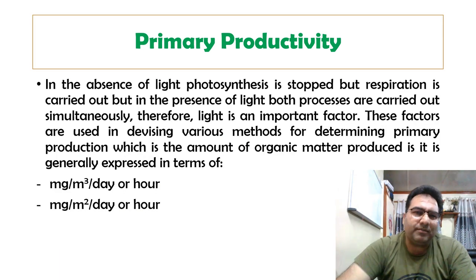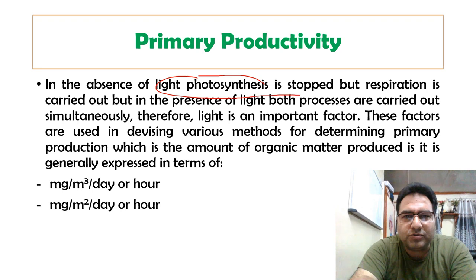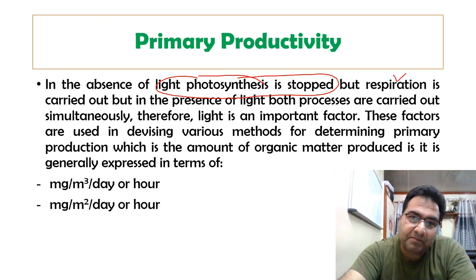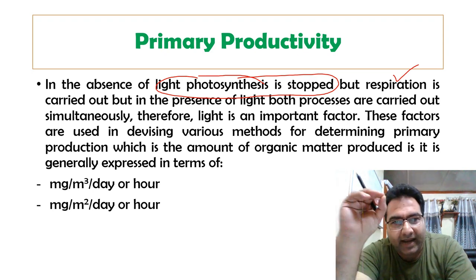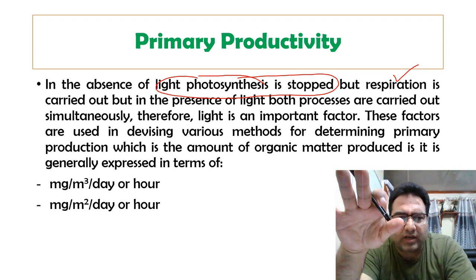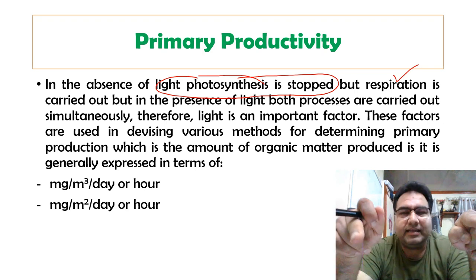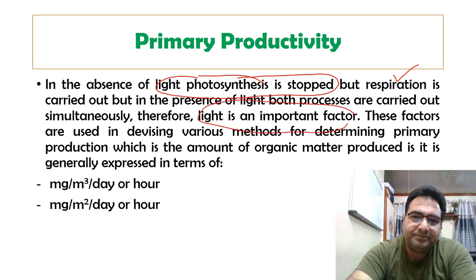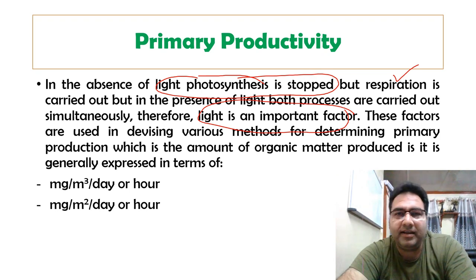If there is absence of light, photosynthesis is stopped. Respiration, however, is carried out in both light and dark conditions — both processes are carried out simultaneously when light is present. The difference between photosynthesis and respiration — oxygen released and carbon dioxide consumed in photosynthesis, while carbon dioxide is released and oxygen consumed in respiration — is the basis for devising various methods for determining primary productivity.